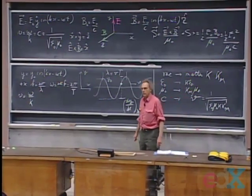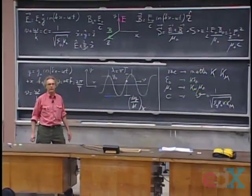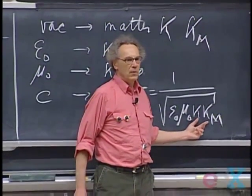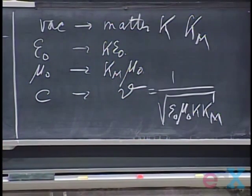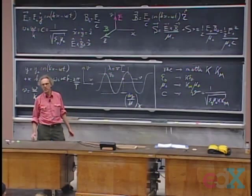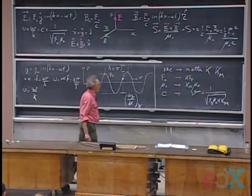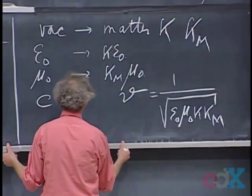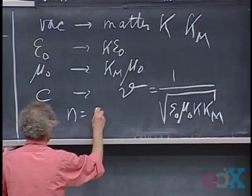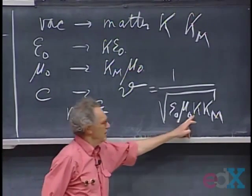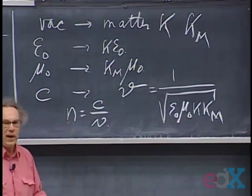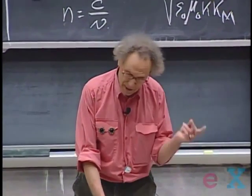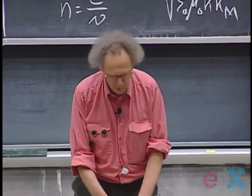Kappa can be a very strong function of frequency. For water, kappa was eighty at low frequencies and even at a hundred megahertz, but at visible light frequencies of a few times ten-to-the-fourteen hertz, kappa was only about one point seven seven. We introduce the index of refraction n = c/v. Since v is a strong function of frequency, n can also vary strongly with frequency — it was about 1.3 for water, but differs slightly between red and blue light. If not, we wouldn't be able to see rainbows.